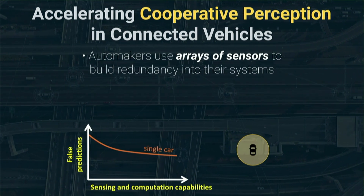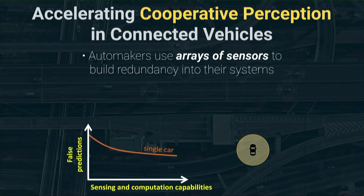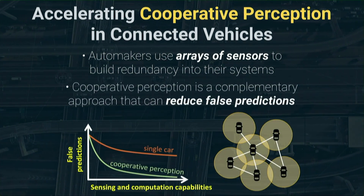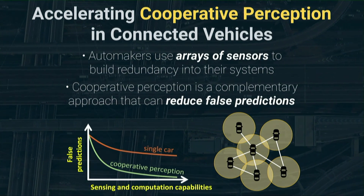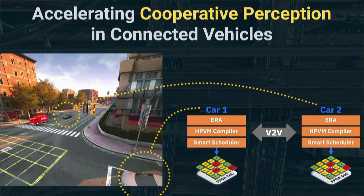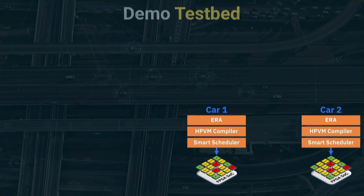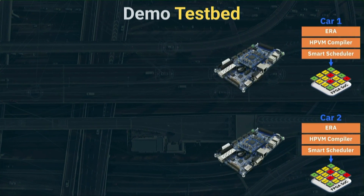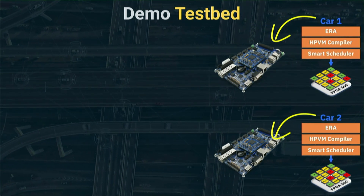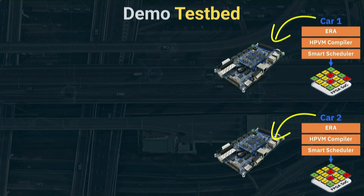Latest generation cars make use of multiple sensors to interpret the environment. However, this single-car approach can generate false predictions regardless of how much sensing capabilities are deployed on the vehicle. Cooperative perception constitutes an alternative approach that allows vehicles to interact with each other to significantly improve their driving capabilities. Our testbed includes two instances of our EPOC's appliance deployed on two different FPGA boards, each equipped with a complete software stack of the ERA application, compiler, and smart scheduler running on FPGA emulation of the system on the chip with accelerators like Fast Fourier Transform and Viterbi Decoding.